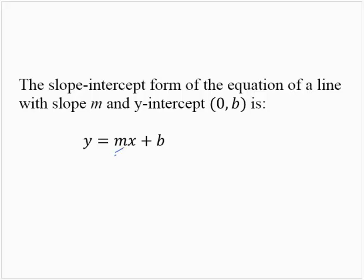Again, m represents the slope of the line, and b is the y-coordinate of the y-intercept of the line.